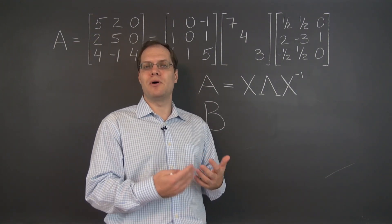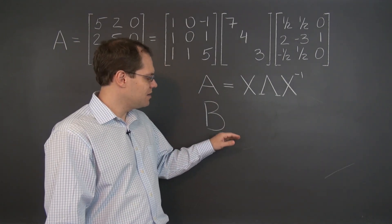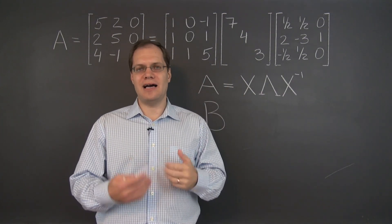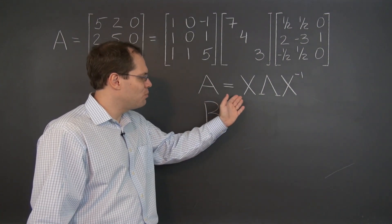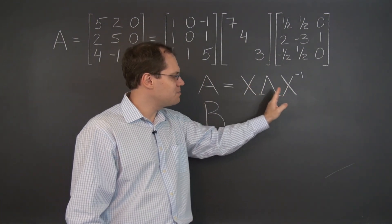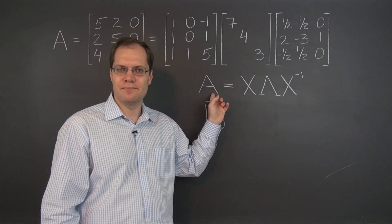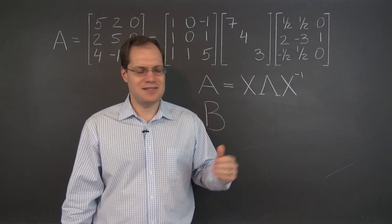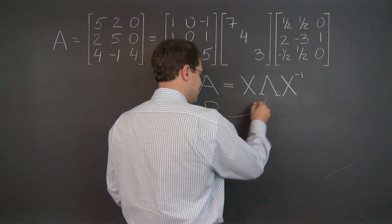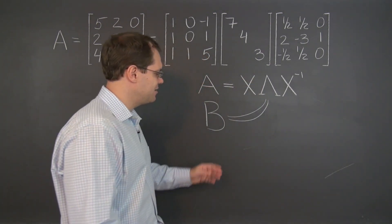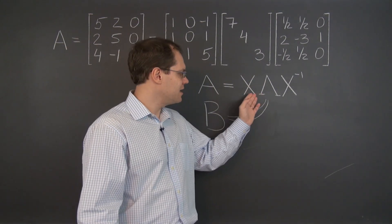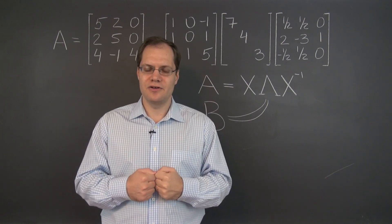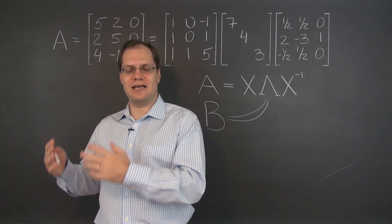When we multiply both sides by X inverse, we get that B equals the same product X·lambda·X inverse. So B would have the same eigenvalue decomposition. The whole point of the eigenvalue decomposition is that if you multiply those three matrices, you actually get matrix A. By the very same logic, when you multiply these three matrices you get matrix B. And since it's one and the same product, it's one and the same matrix. So B is the exact same matrix X·lambda·X inverse. That matrix is unique — you only have one matrix that has a prescribed set of eigenvalues and eigenvectors.